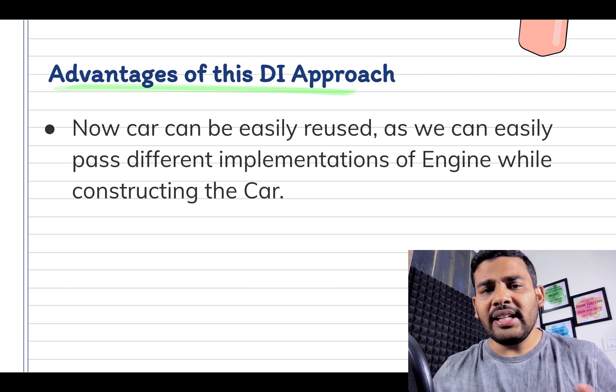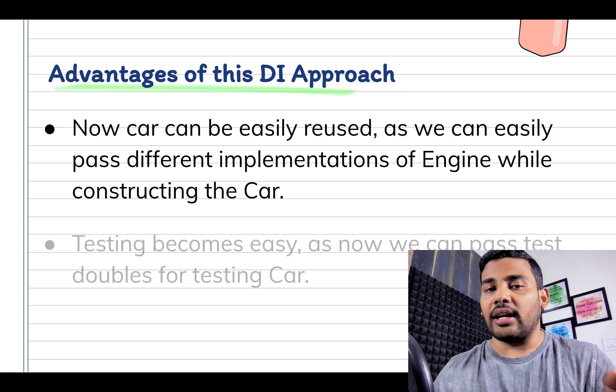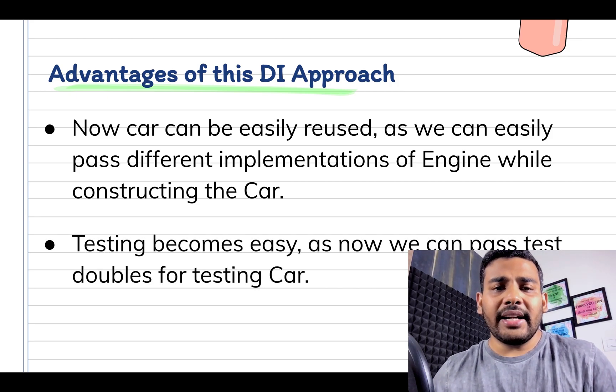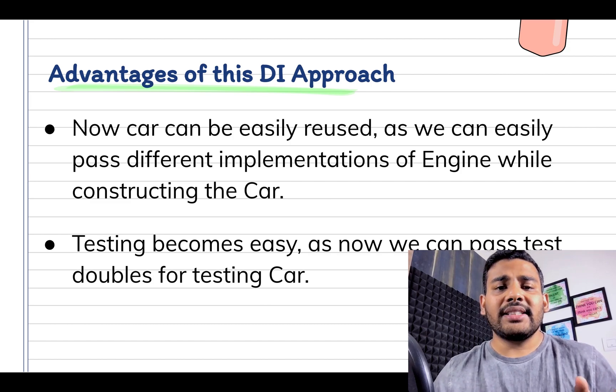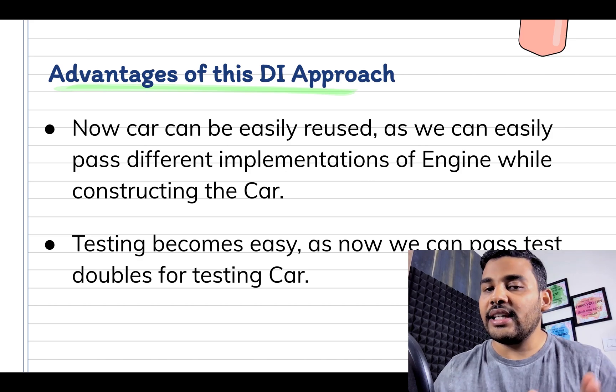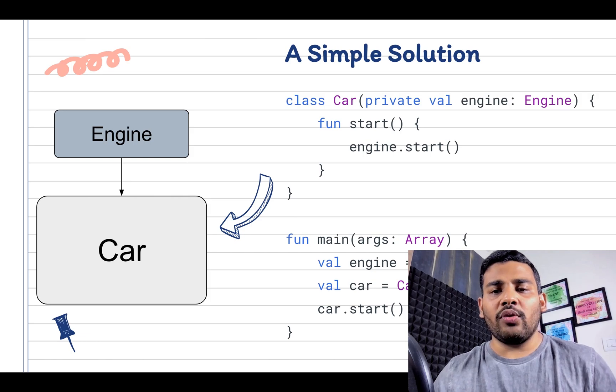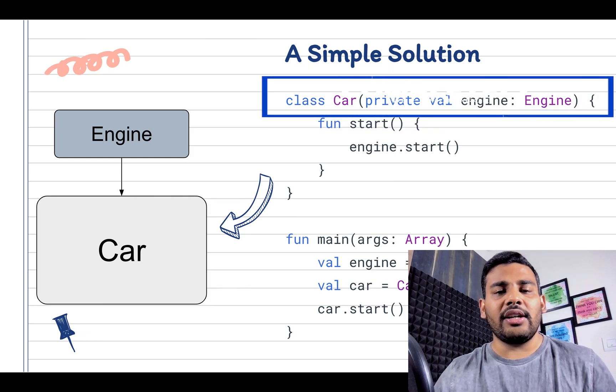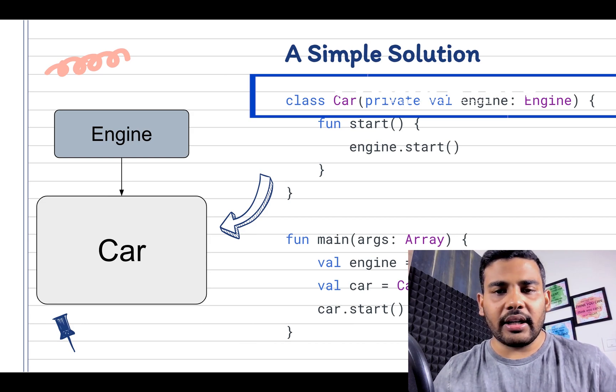Now Car and Engine are not tightly coupled as we are getting the Engine from outside the Car. We can easily pass different engine implementations to Car while constructing a Car. Passing test double is also easy now for testing. A simple change solved almost all the issues that we had, and this approach is called dependency injection. The Engine is a dependency to Car, and now we are injecting the dependency via constructor, so it is also called constructor injection.